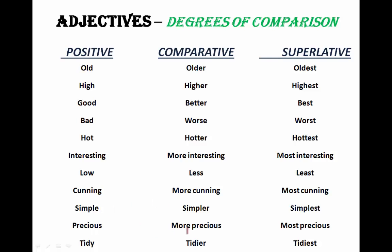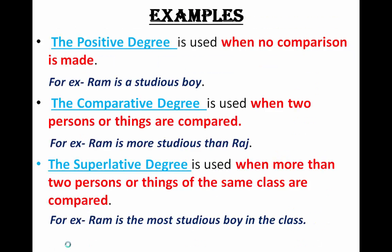Precious, more precious, most precious. Tidy, tidier, tidiest. These are the positive degree forms, these are the comparative degree forms, and these are the superlative degree forms. When there is no comparison, use the positive section. When comparing two things or people, use the comparative section. When comparing more than two people, use the superlative section.